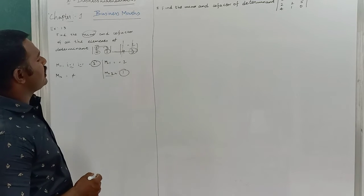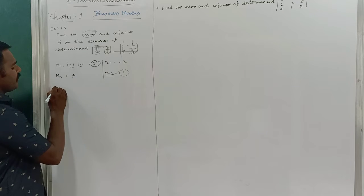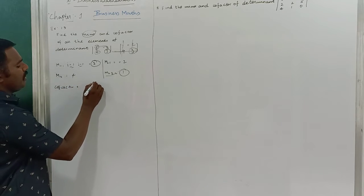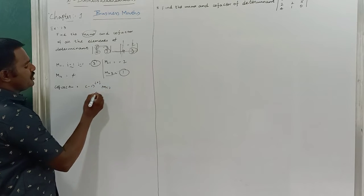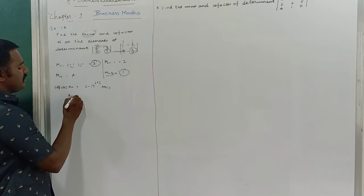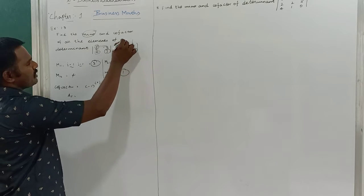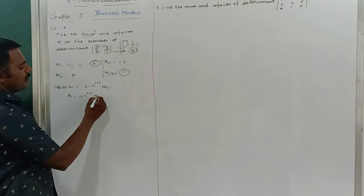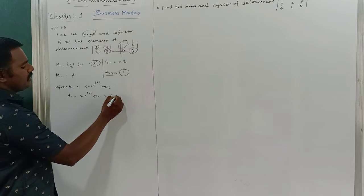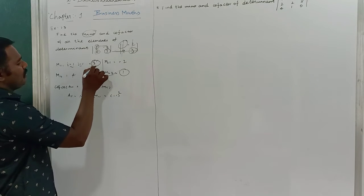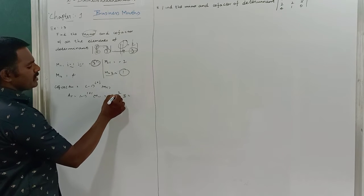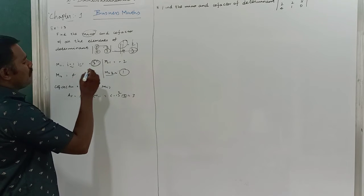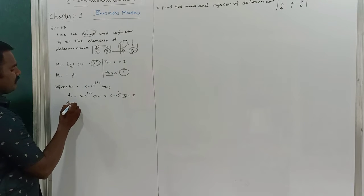Now the cofactor. The formula is Aij = (-1)^(i+j) × Mij. So cofactor A11 = (-1)^(1+1) × M11 = (-1)^2 × 3 = +1 × 3 = 3. Therefore 3 is the cofactor of the first element.